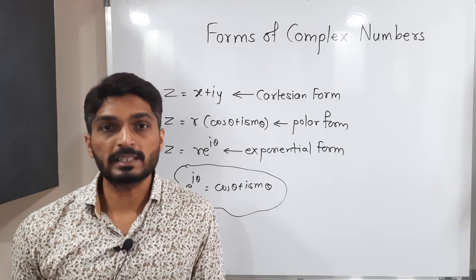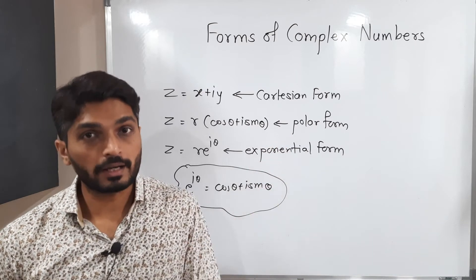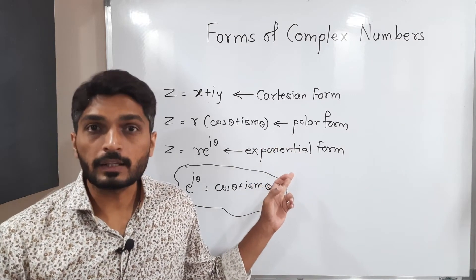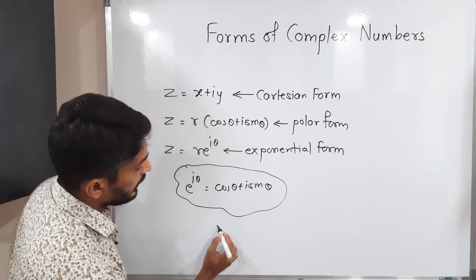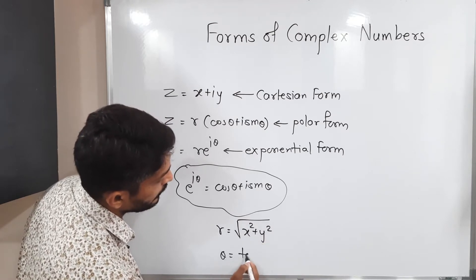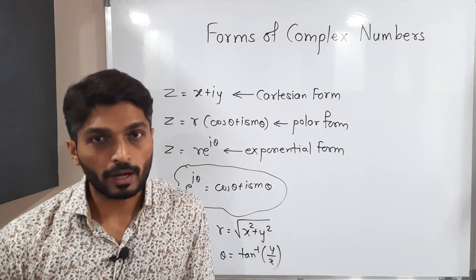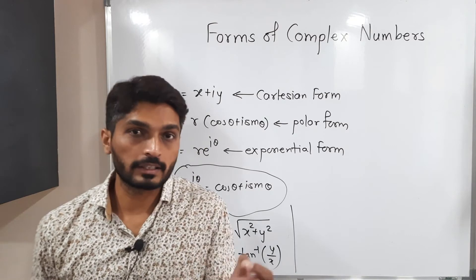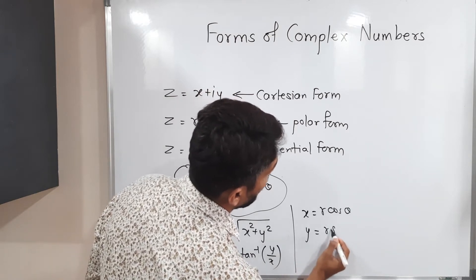When we have any complex number in X plus iY, we can convert it to polar or exponential form by finding R and theta. And conversely, when we have a number in polar or exponential form, we can easily convert it to Cartesian form. R is equal to square root of X squared plus Y squared, and theta is equal to tan inverse of Y by X. When you know R and theta, you can find X and Y using X equals R cos theta and Y equals R sin theta.